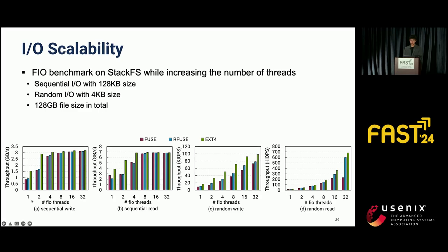To investigate I/O scalability of RFuse, we ran the FIO benchmark on StackFS while increasing the number of threads, varying both data access pattern and request size. For sequential workloads, both FUSE and RFuse show comparable throughput to ext4 as the thread count increases, attributed to the aid of the page cache in the kernel. For random workloads, RFuse demonstrates higher throughput than FUSE with increasing thread counts. Notably, in the random read workload, FUSE throughput stops scaling beyond 16 threads, while RFuse continues to show scalable throughput. Specifically, at 32 threads, RFuse achieves throughput 2.27 times higher than FUSE. RFuse shows better scalability due to its utilization of per-core ring channels.